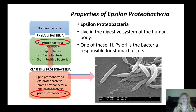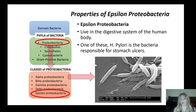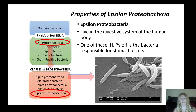The epsilon proteobacteria are of interest because they live in the digestive system of the human body. Some cause illnesses, while others are benign and live in symbiosis with us as probiotics. One specific species important to know is H. pylori (Helicobacter pylori), the bacteria responsible for stomach ulcers.